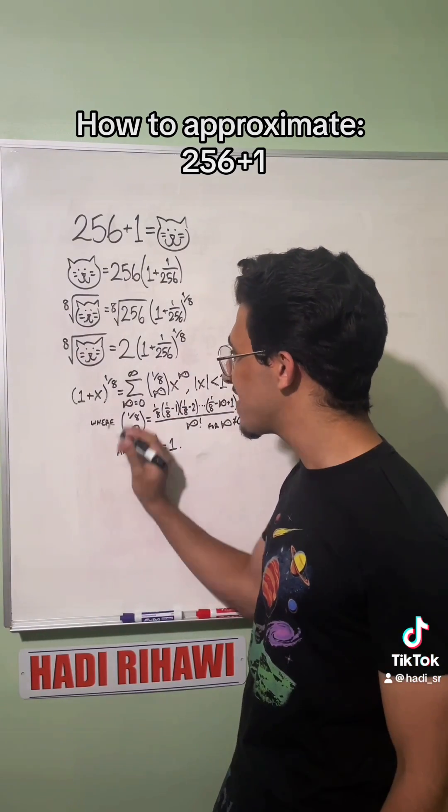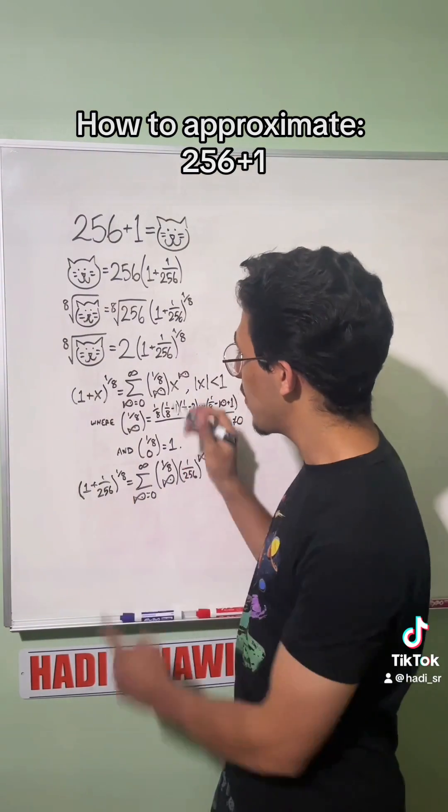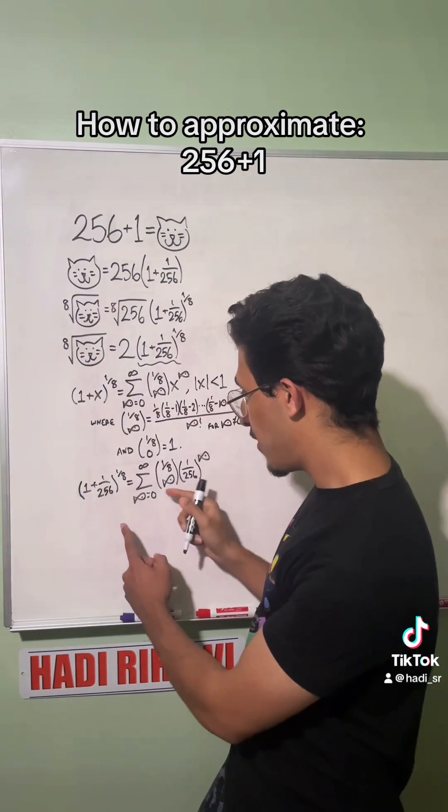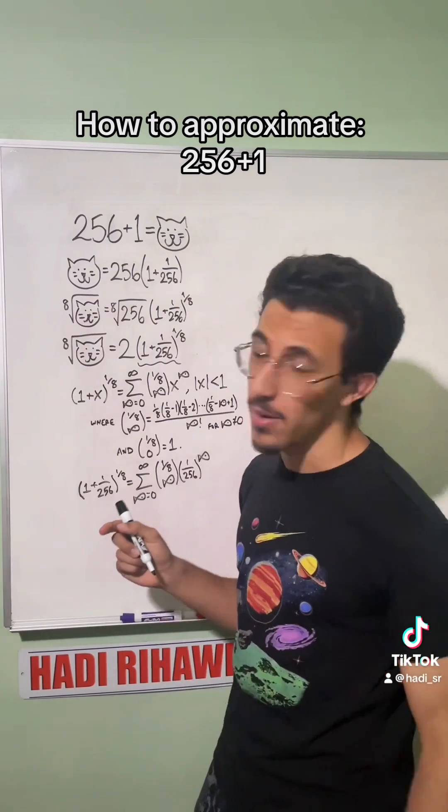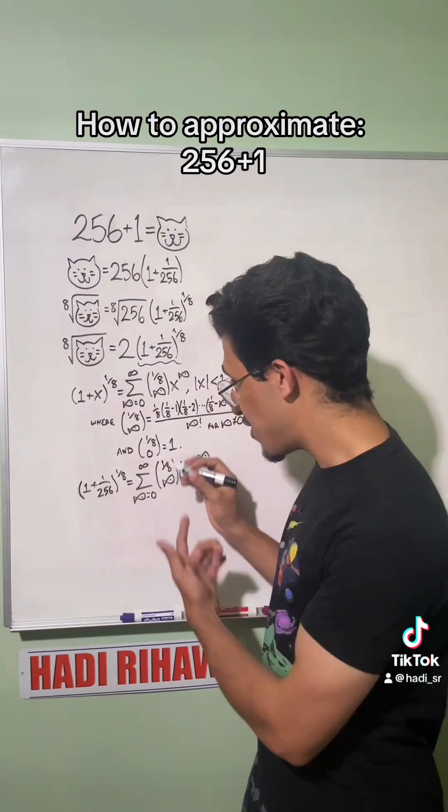Now we're going to plug in 1 over 256 for x, and we're going to get that (1 + 1/256) to the one eighth, which is right here, is equal to this infinite series. Well, I don't want to compute an infinite series, that's way too many terms. So instead I truncated it at n equals 3.